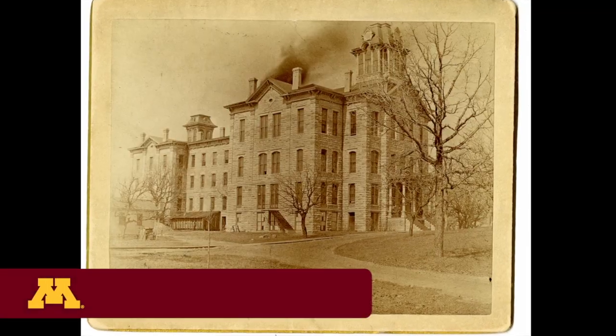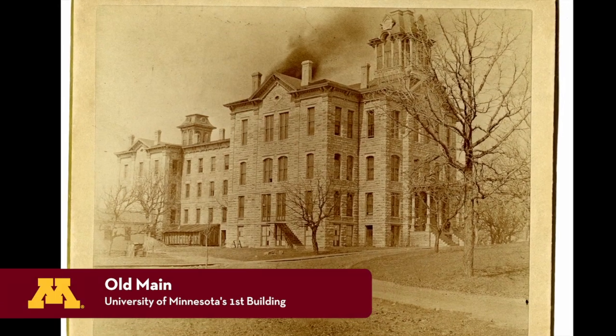The Morrill Act came at a time when the university was in dire straits. The university had closed after a short opening and served as a preparatory department. The Civil War was happening at the same time, and the university was in debt for the construction of its first building, then known as the Main Building, now referred to as Old Main. The state legislature in 1864 brought together a three-member Board of Regents, whose task was to help get the university out of its deep indebtedness.